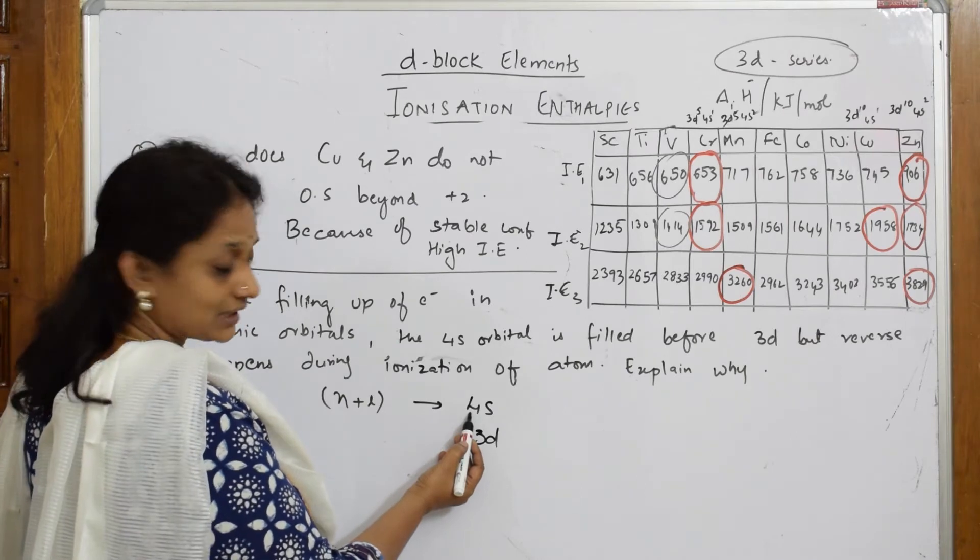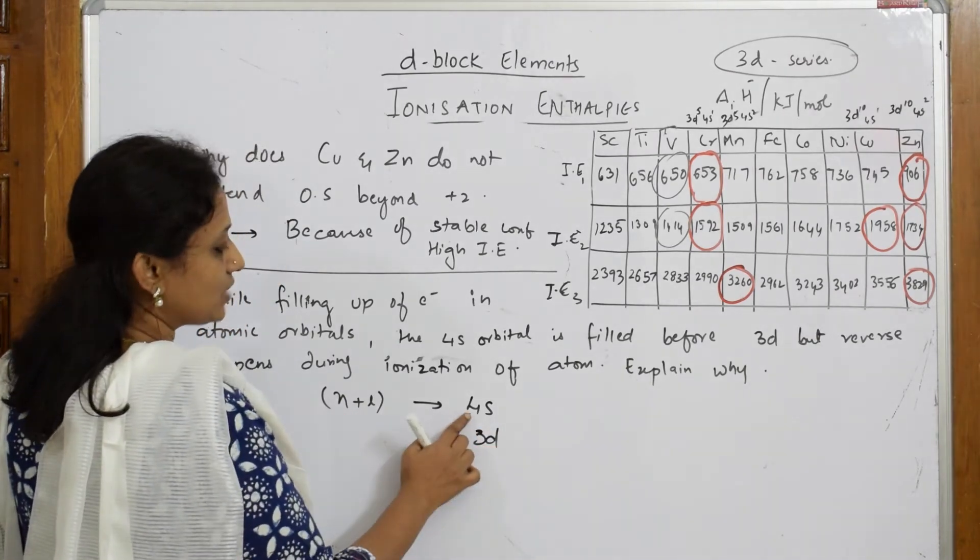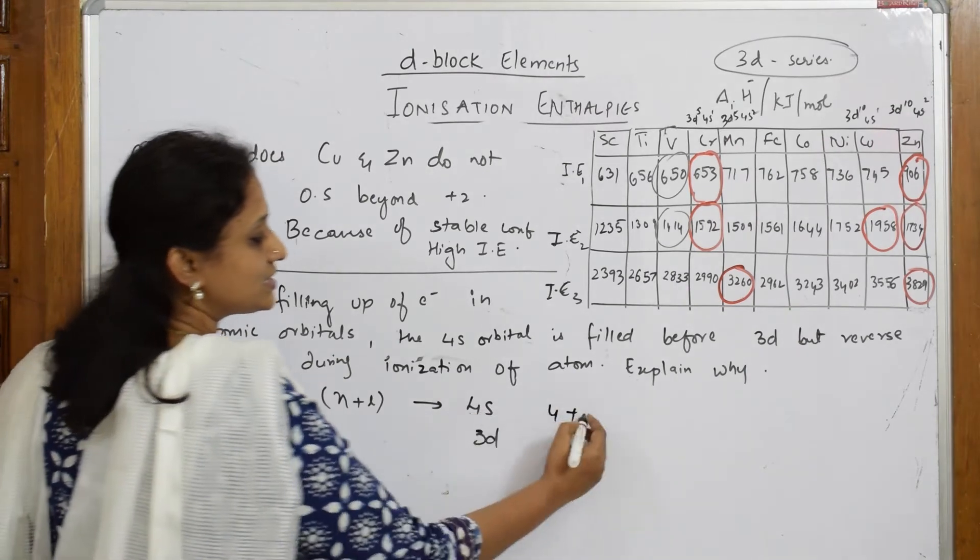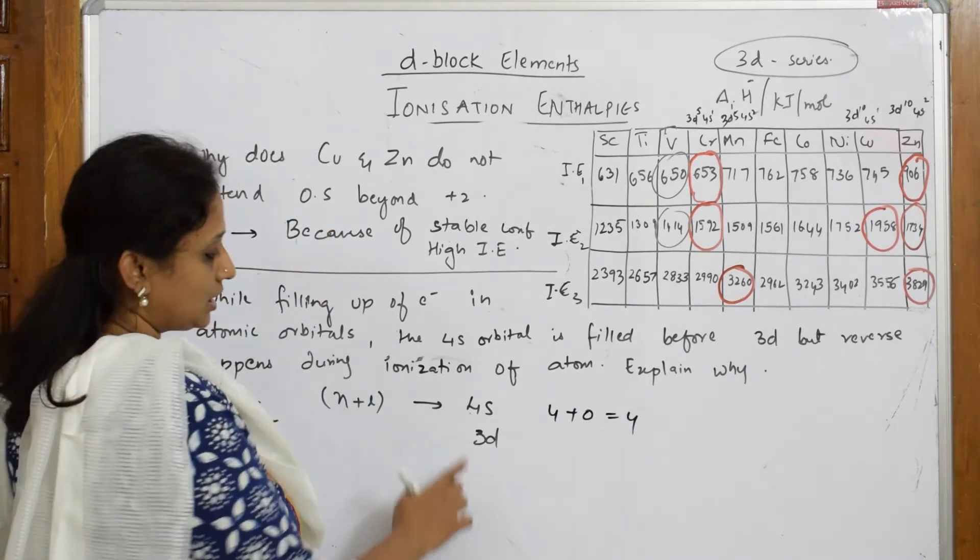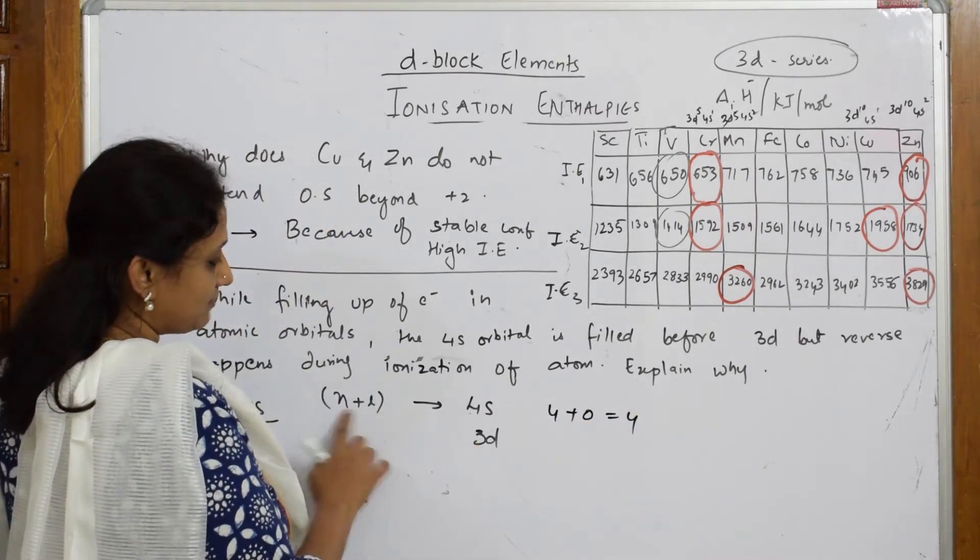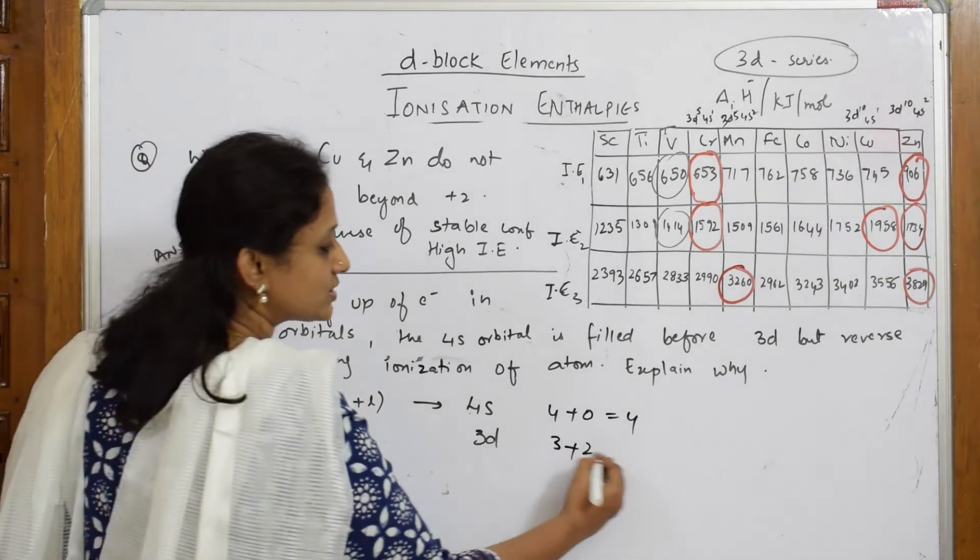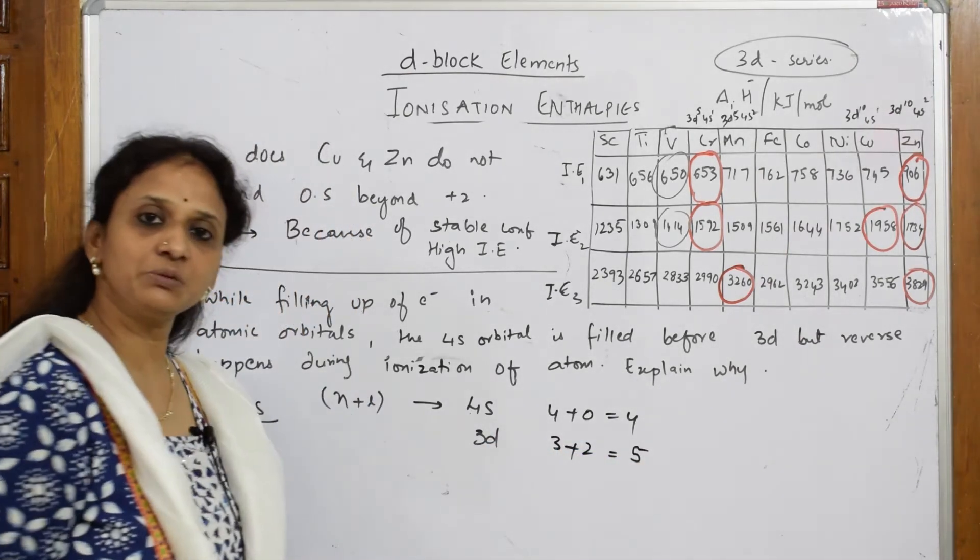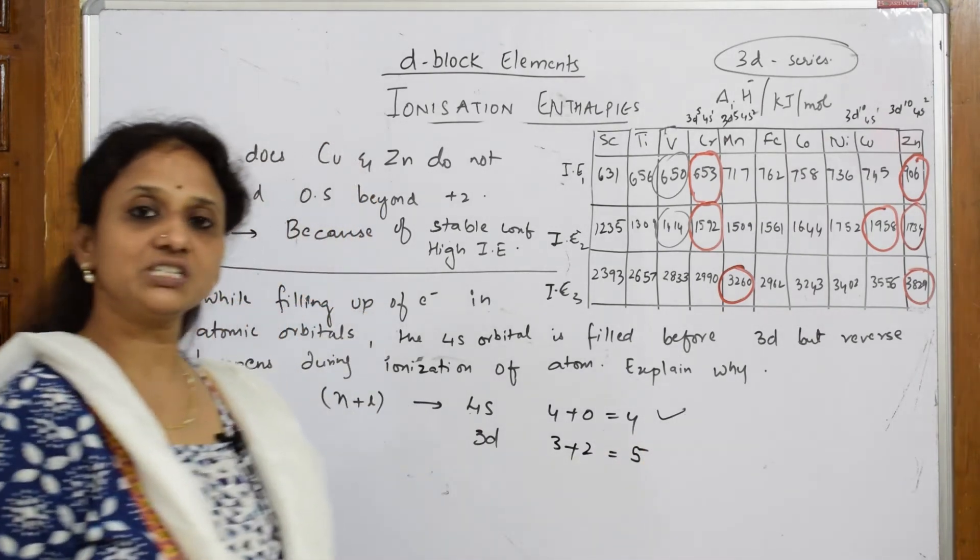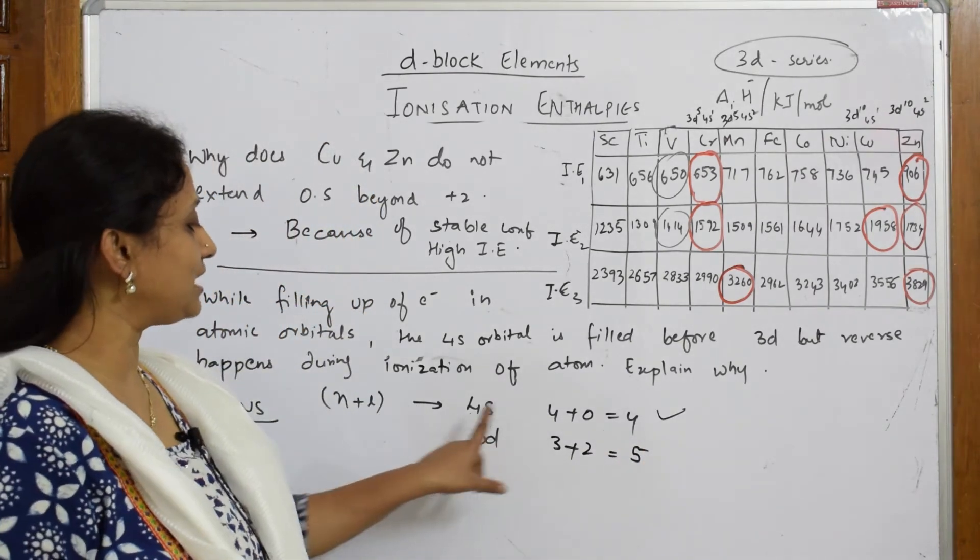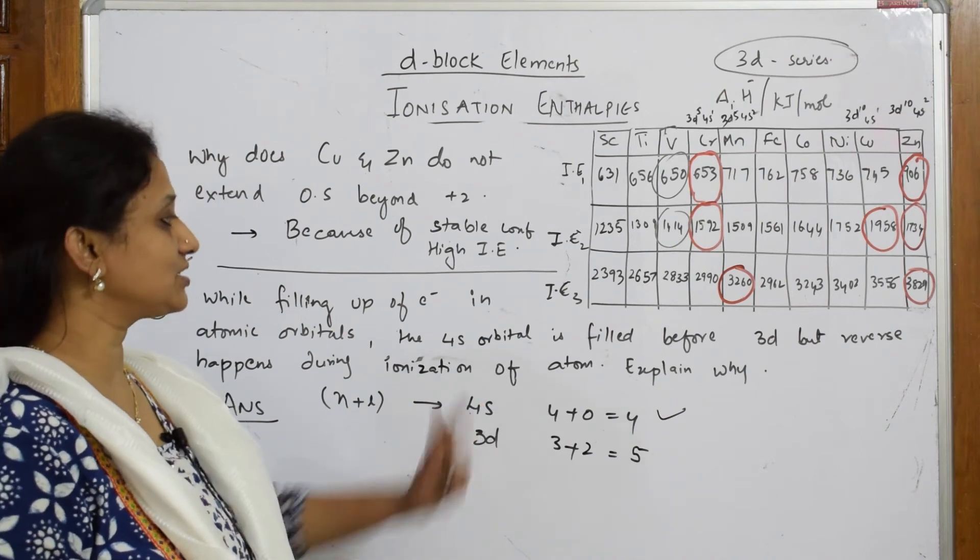This is your principal quantum number n. So n plus l rule: n is 4, l value for s is 0, so this is 4. For 3d, principal quantum number n value is 3, and for d, l is equal to 2, so this is 5. Which is minimum value in these two? This is the minimum value, so whichever is minimum I'm going to fill that first and then go to d. So that is the reason for the first one.